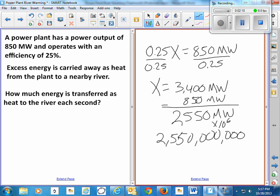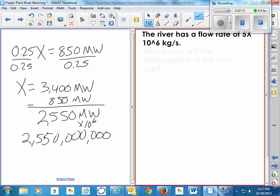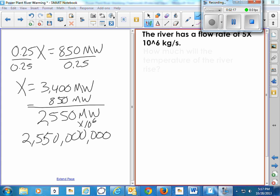Well, it's 2.5 billion joules of heat. Let's say our river has a flow rate of 5 million kilograms of water every second. 5 times 10 to the sixth kilograms every second pass a certain line across the river.